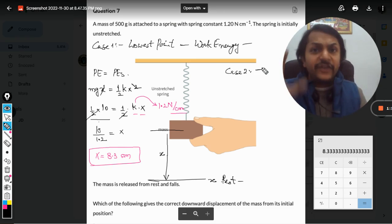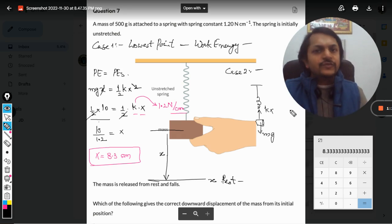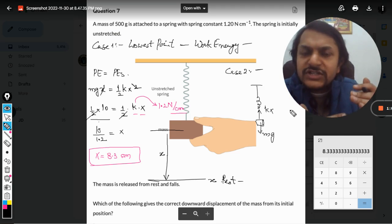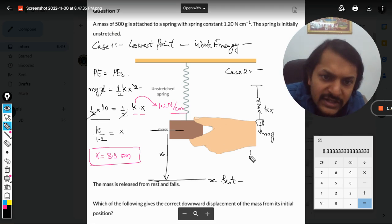Now case number two is fairly simple. At equilibrium, what is happening here? This is having a downward force, that is mg, and is being acted upon by an upward force which is kx. Both forces are creating an equilibrium, so both forces have to be equal.